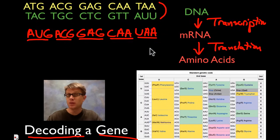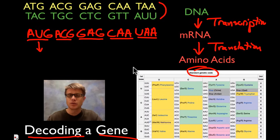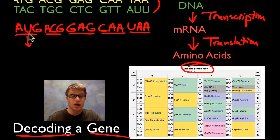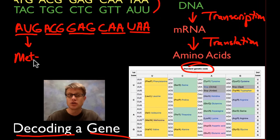Now if we want to do the actual translation and figure out what amino acids are created, I have to use one of these standard genetic code decoders. Some of them will be circular, some of them will be like this. But basically what you do is you look at the codon in the messenger RNA. So A-U-G — I just find that down here. So here's A-U-G right here. So that's going to be methionine. Methionine is going to be the first amino acid. Now methionine is special because it also starts all genes. All genes are going to start with methionine. Sometimes we trim that off later. But basically that's going to be our start sequence.